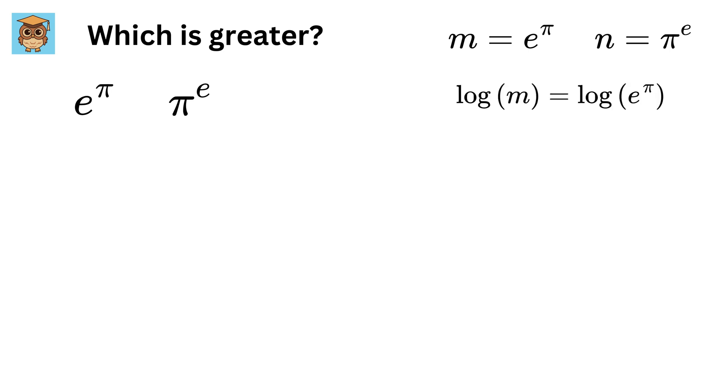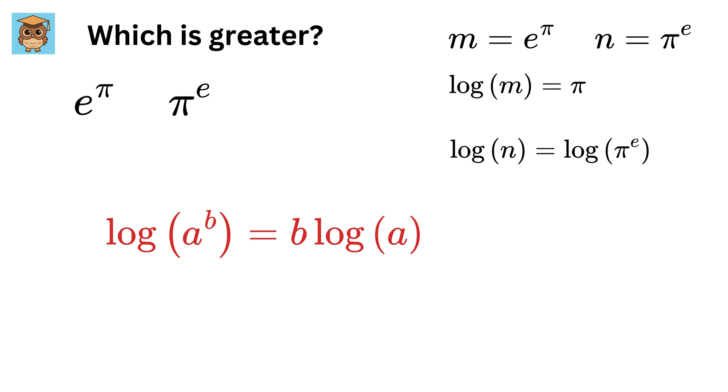equal to the log of e raised to π. Using the logarithm rule, we get log(m) equals π. Now the log of n will be equal to the log of π raised to e, which will be the same as e times log(π).